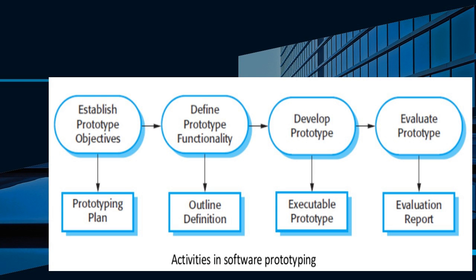The second activity is to define prototype functionality: to develop a system to prototype the user interface, to validate functional system requirements, or to demonstrate the feasibility of the application to managers. The third activity is developing the prototype — deciding what to put into and, perhaps more importantly, what to leave out of the prototype system, to reduce prototyping costs and accelerate the delivery schedule.